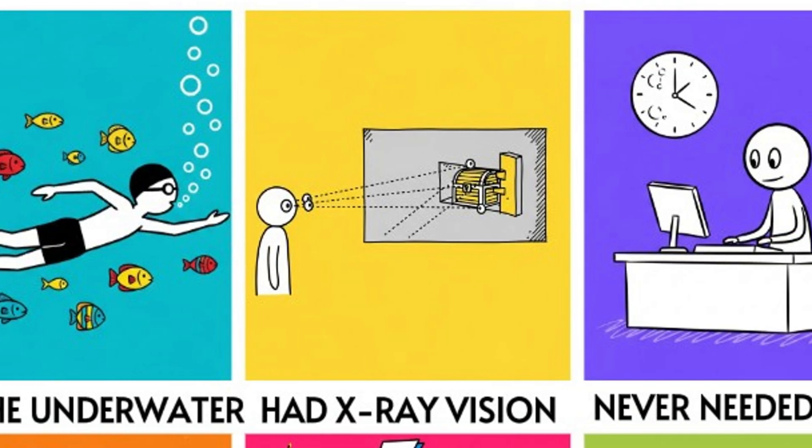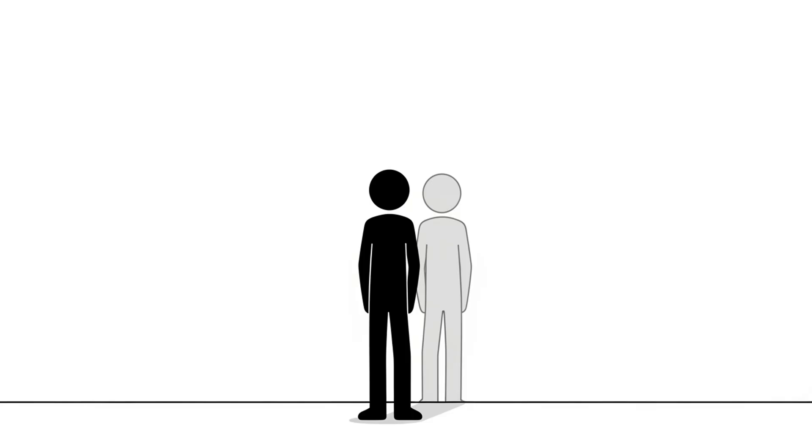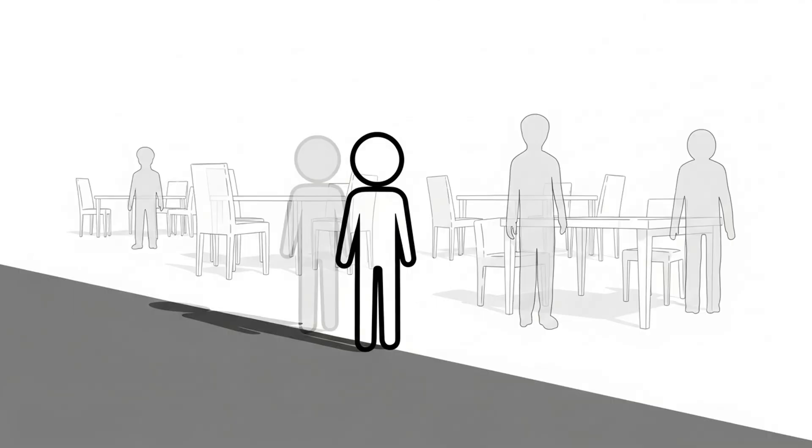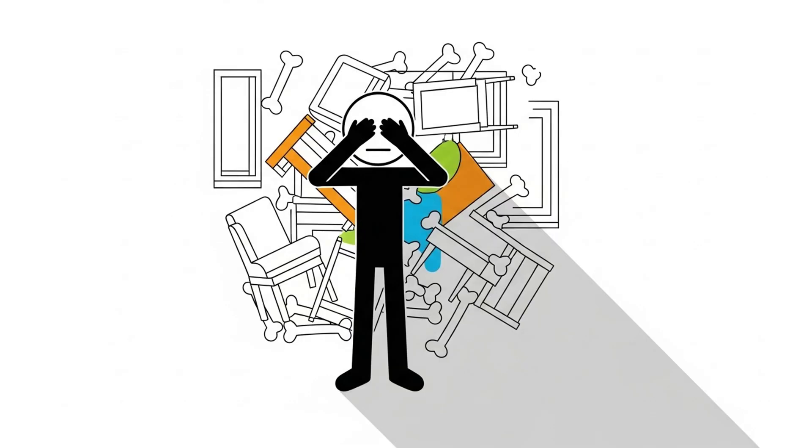What if humans had X-ray vision? Imagine seeing through walls, clothes, even your own skin. X-ray vision works by detecting high-energy light waves that pass through some materials but not others. If you had it all the time, your brain would have to filter layers of reality at once. Without filters, life would be overwhelming, too much information.